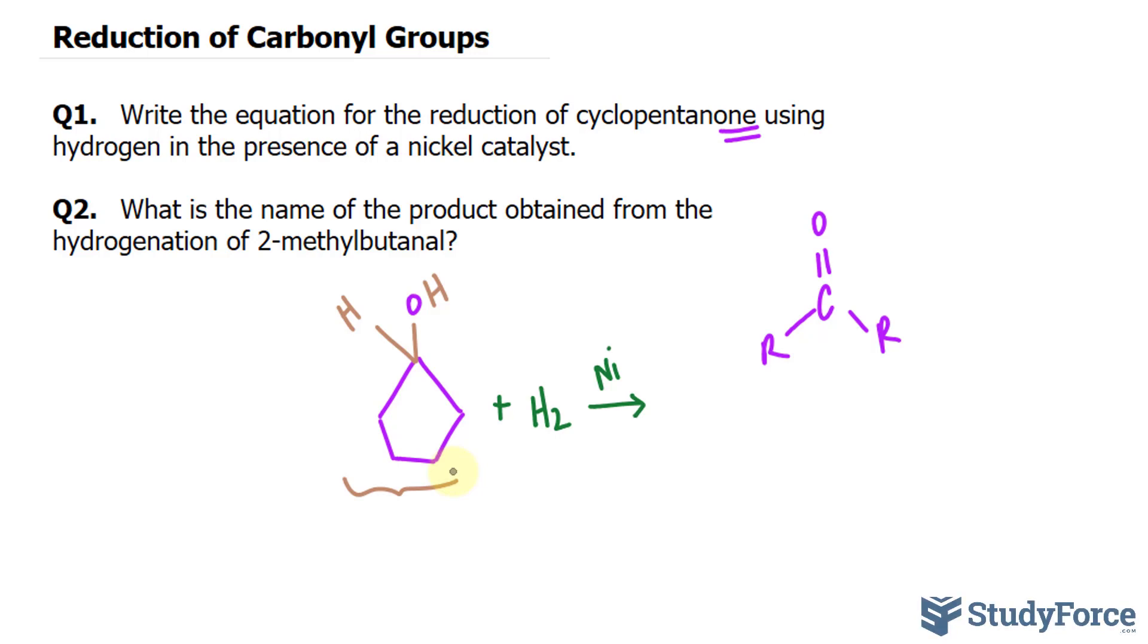The second question reads: what is the name of the product obtained from the hydrogenation of 2-methylbutanal? So here we have A-L, and that means it's an aldehyde. Aldehydes look a little different than ketones. So instead of this R being a carbon, it's hydrogen.